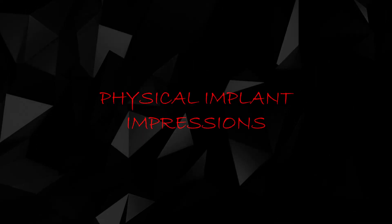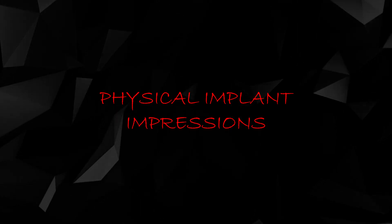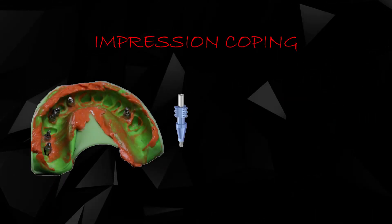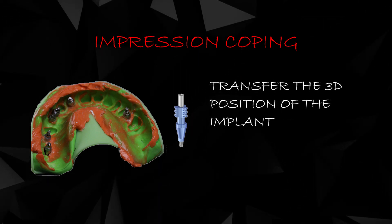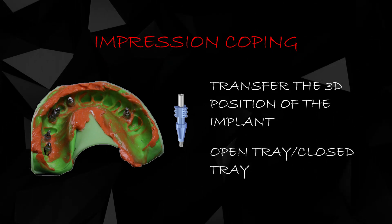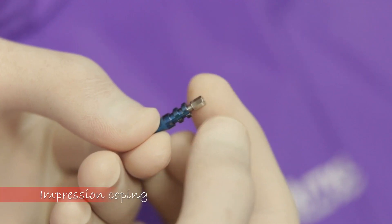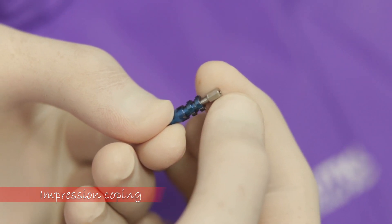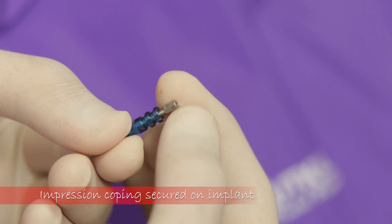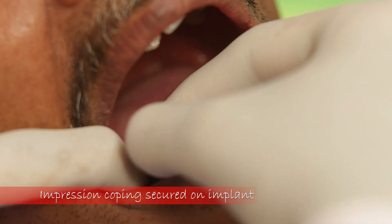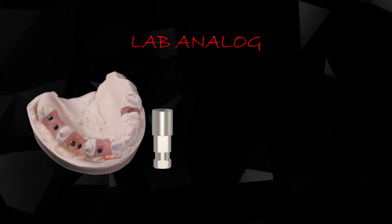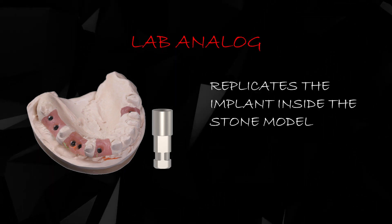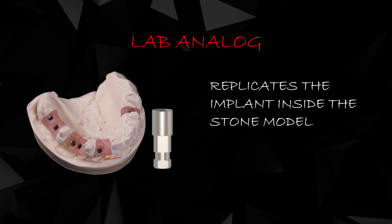I'll start by quickly reviewing the basic components of a physical or analog implant impression protocol. These are called impression copings, which help us transfer the three-dimensional position of the implant to the stone model. They can be of the closed tray or open tray variety and have specific indications. These components are called lab analogs, which are replicas of the implant placed inside the patient's jaw, replicating the implant inside the stone model.